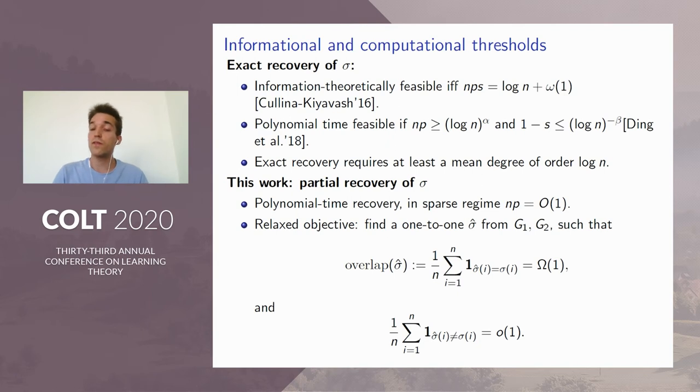We know the information theoretical bound that claims this problem is feasible if and only if nps, which is the mean degree in the intersection graph, is at least log n. This problem is feasible without taking any computational constraint into account. But for polynomial time algorithms, we have state-of-the-art results showing that there is a polynomial time algorithm that succeeds with high probability if np is greater than log n to the power alpha and if s is close enough to 1, that is, the graphs are highly correlated. In any case, exact recovery requires at least a mean degree of order log n. In this work, we focused on another regime which is much sparser, where the mean degree np is of order 1, that is constant.